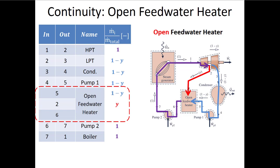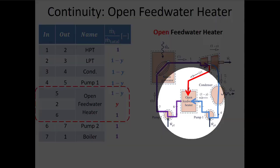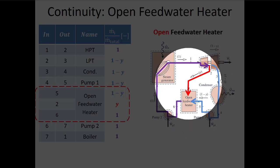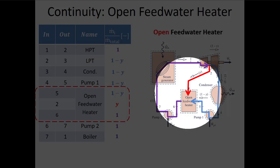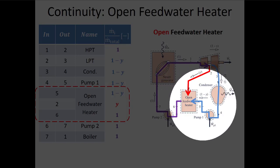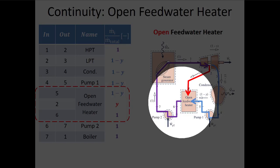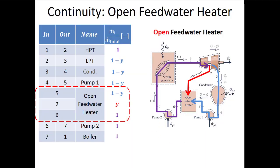If I do conservation of mass on the open feed water heater at steady state, the mass flow rate coming in at state two — that's y — plus the mass flow rate coming in at state five — that's one minus y — adds together to give the outlet mass flow rate, which equals one. So mass is conserved.